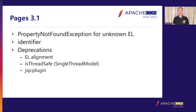Let's look at Pages 3.1. The Pages specification is fairly mature, so there aren't too many changes. The key one is handling of unknown EL identifiers. In prior versions, an unknown EL identifier was essentially treated as null, which would get coerced to an empty string — making it non-obvious why you were getting an empty string. Pages 3.1 adds a new page directive that lets you trigger an exception if any EL expression tries to use an unknown identifier, which should make tracking down typo-related bugs a lot easier.